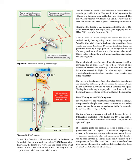If two vectors in a wind triangle are known, the third can be found by drawing a diagram and measuring the parts. The wind triangle includes six quantities — three speeds and three directions. If four of these quantities are known, the other two can be found. This is called solving the wind triangle. The wind triangle may be solved by trigonometric tables; however, this is unnecessary since the accuracy far exceeds the accuracy of the data and results needed. In flight, the wind triangle is solved graphically, either on the chart or on the wind face of the computer.